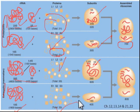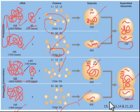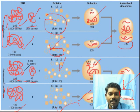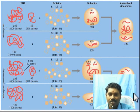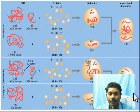The 18S rRNA joins with 33 proteins to form the smaller 40S subunit. The 40S and 60S subunits join together to form the 80S ribosome. In humans, chromosomes 12 to 14, and chromosomes 21 and 22, contain the DNA codes that produce ribosomal RNA.